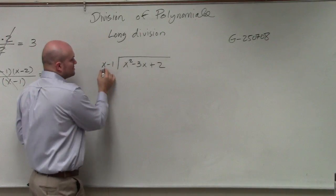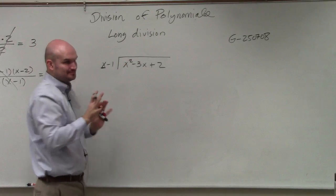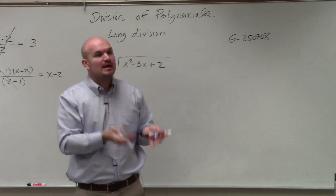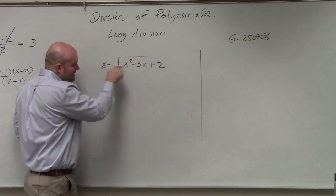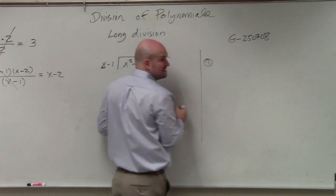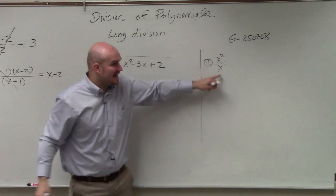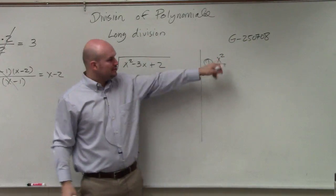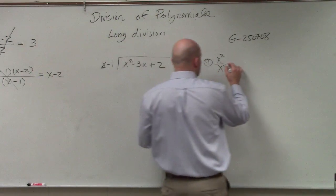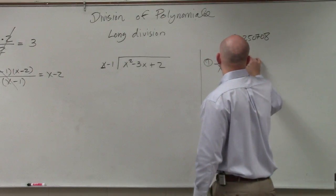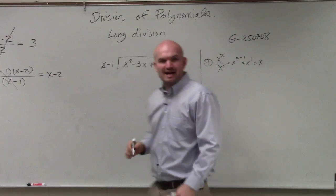So now all we're simply going to do is take our leading term and divide it into our first term of our dividend. A lot of students have trouble with this, so I recommend doing the work on the side of your paper. How many times does x divide into x squared? Using the quotient rule, we know it goes in there x times.